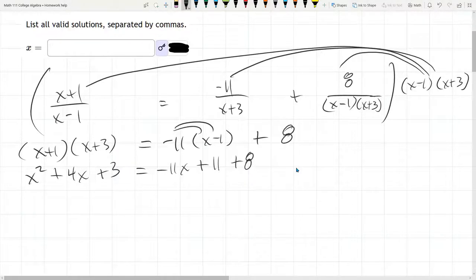Right here, you might be tempted to factor here, but don't do it. You have a quadratic equation. You have to collect all the terms on one side. I like my x squared to be positive, so I'm going to collect everything onto the left. I'm going to add 11x to both sides. 4 plus 11 is 15x. Subtract 8. So 3 minus 8 is negative 5.